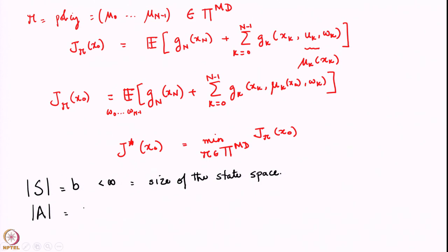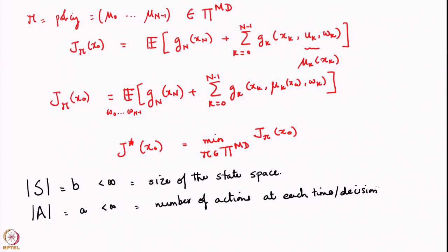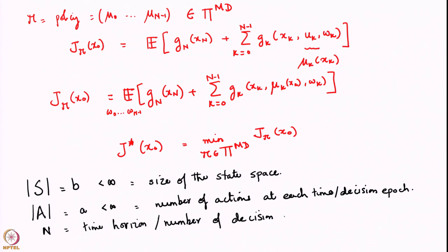The number of actions available at each time step is a, and suppose this is also finite. This is the number of actions at each time step, or each decision epoch as you want to call it. And suppose we have n which is your time horizon or number of decision epochs.